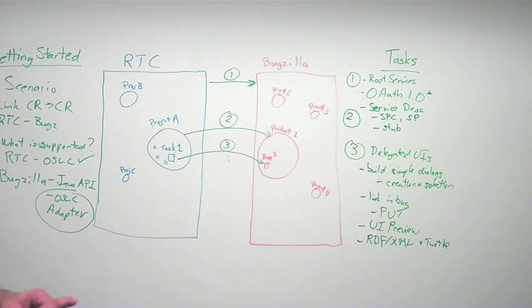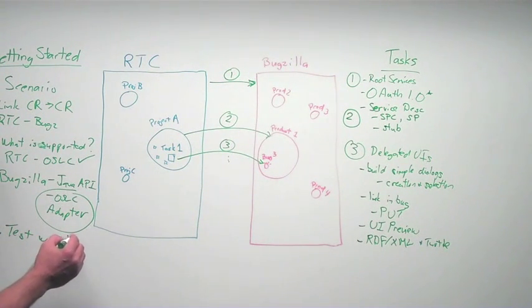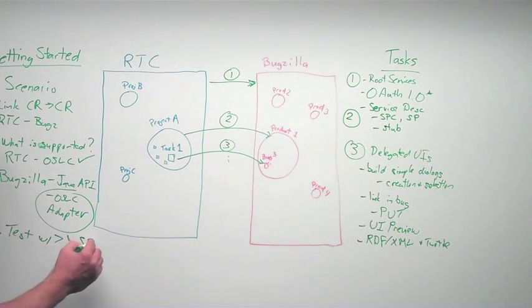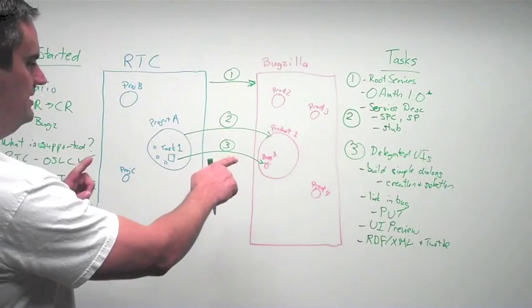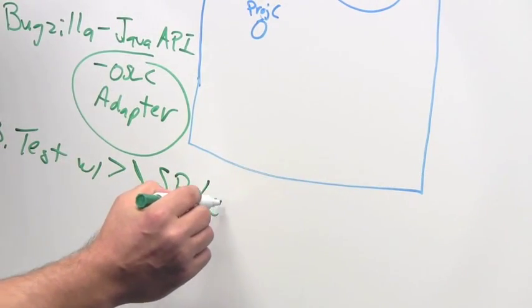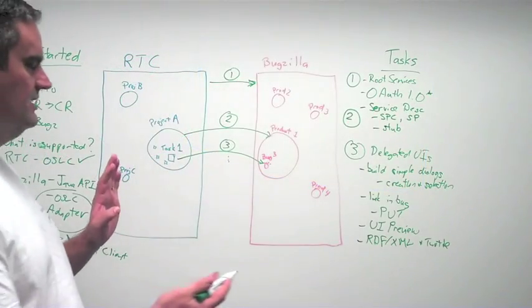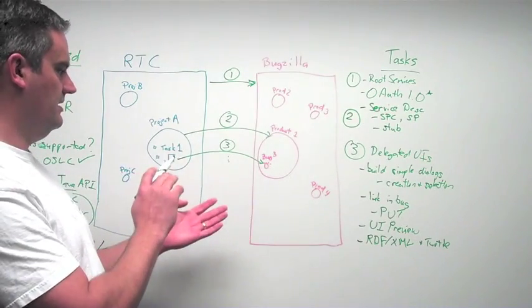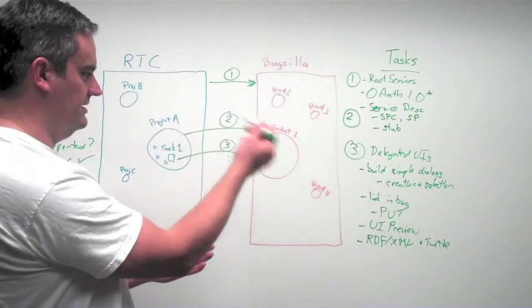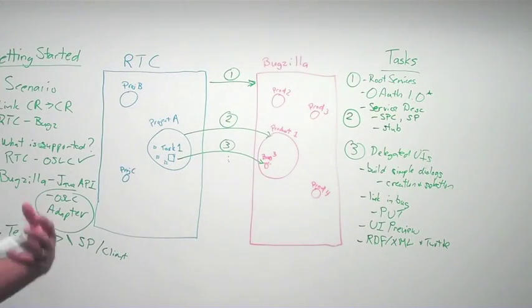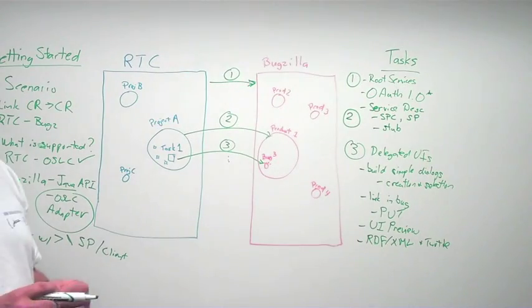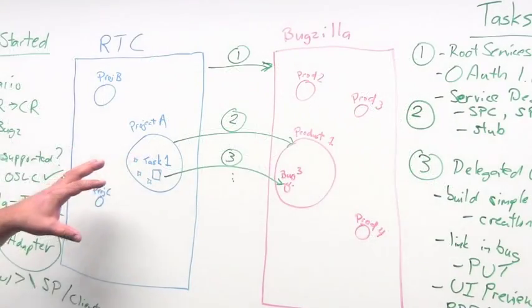The other recommendation I would have, not just getting started but using it in general, is test with greater than one service provider. So instead of one, even another client. In this case, we're only testing it with RTC hitting our service provider. So if we were communicating either way, we haven't talked about making Bugzilla a consumer of OSLC. In this case, it only is a provider of the OSLC services, so it's only receiving a request. But I would recommend selecting, getting another tool, Rational Quality Manager would be a good one to test.